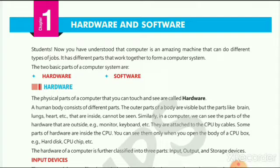Now, tell me one thing — which parts of the computer can we see? Yes, you are right. Monitor, CPU, mouse, and keyboard are hardware of the computer system. But parts like hard disk, CPU chip, motherboard, etc., we cannot see, but they are also called hardware because they are fixed inside the CPU box. Whenever we open the CPU box, we can see them. So they are hardware parts of the computer system.